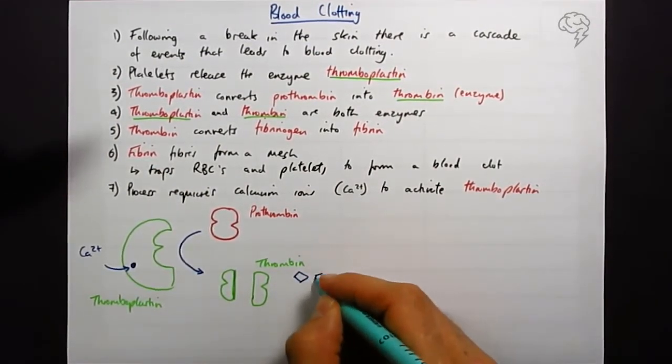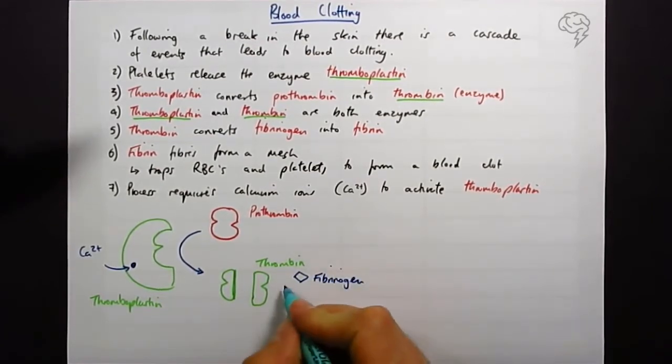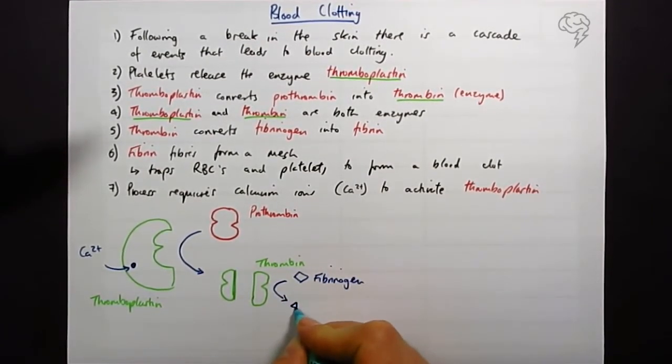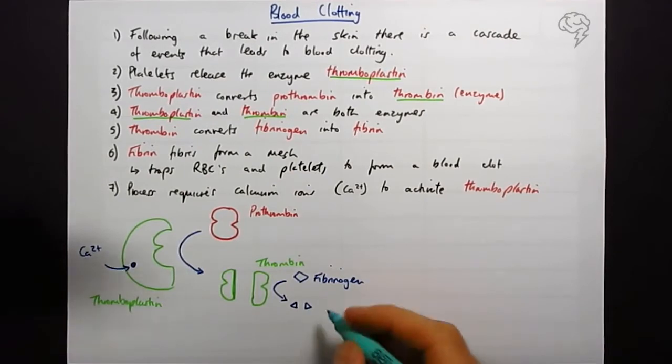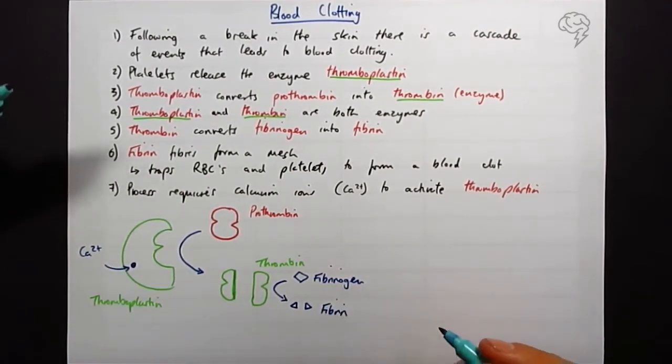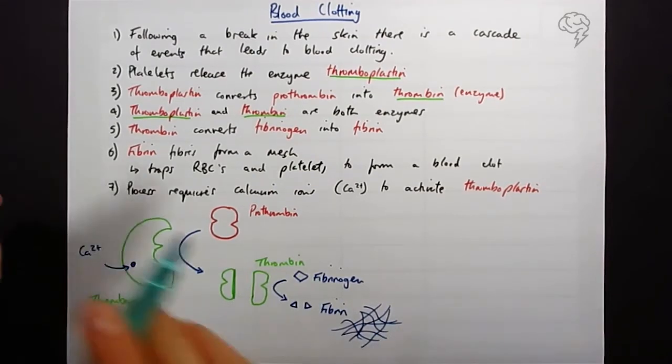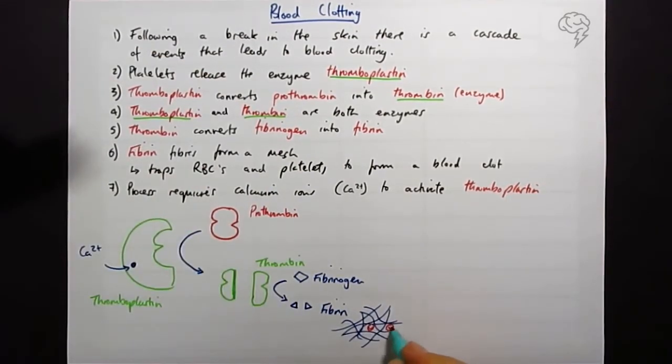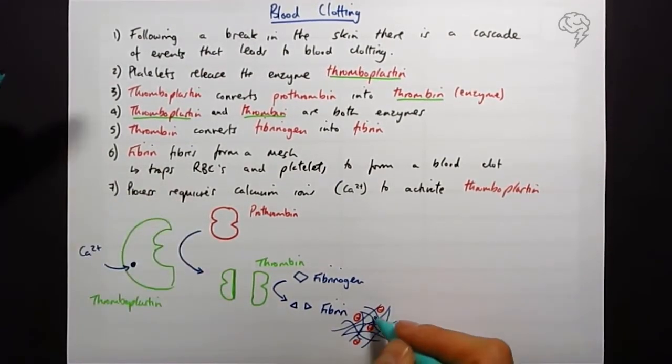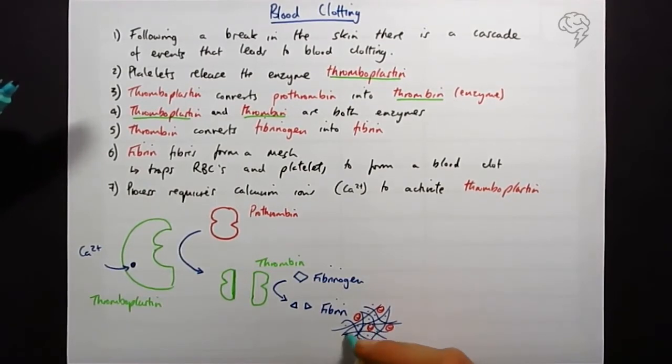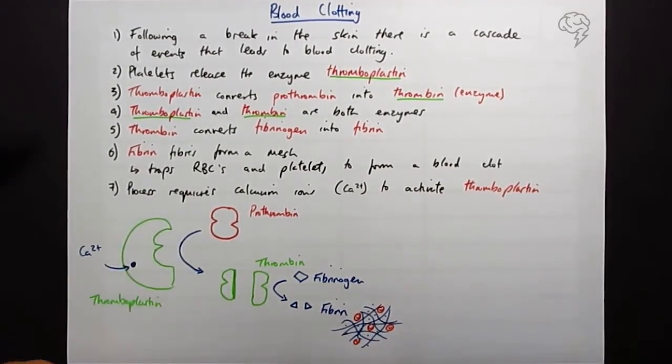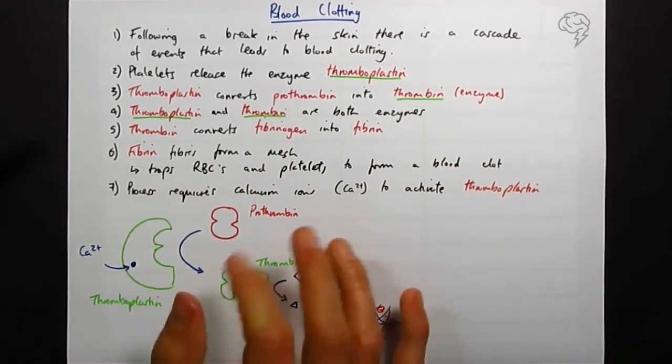This diamond shaped thing called fibrinogen into fibrin. And remember, fibrin - actually this is purely a diagram - fibrin is going to form this like mesh of fibers, it's a protein, and that's going to trap red blood cells and platelets, which I'm just going to draw. And this is going to form a blood clot. So I'm just trying to demonstrate how the flow of events happens.